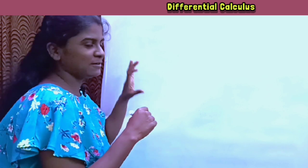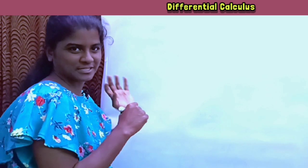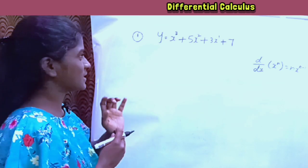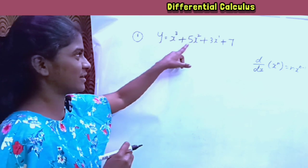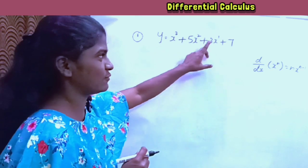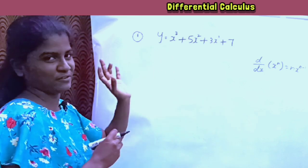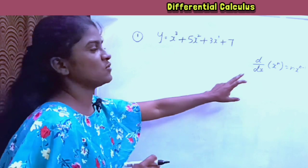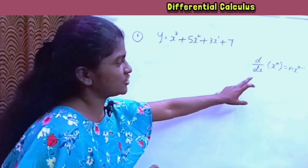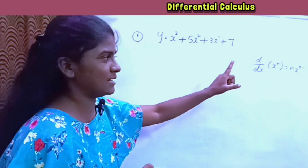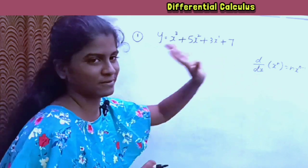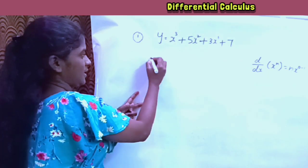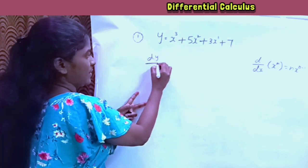Now we will see the basics through our sums. Differentiating the following with respect to x: y is equal to x cube plus 5x square plus 3x plus 7. How do we differentiate with respect to x? We use dy by dx, applying the formula: differentiation of x power n is equal to n into x power n minus 1.